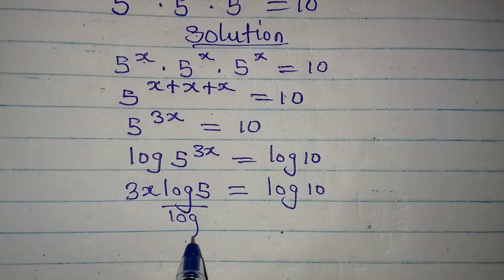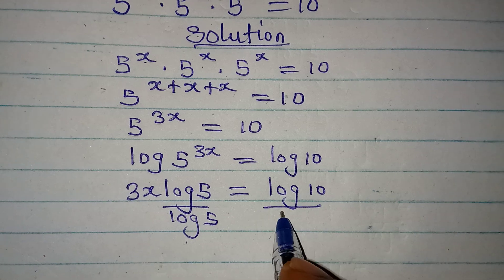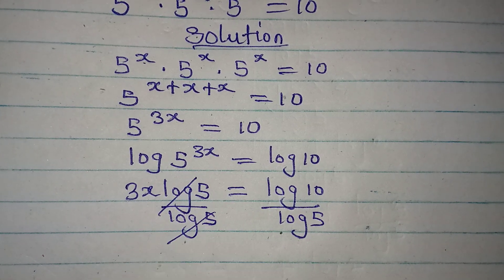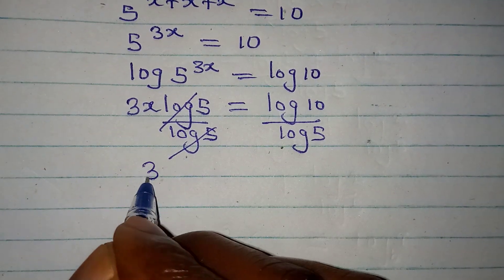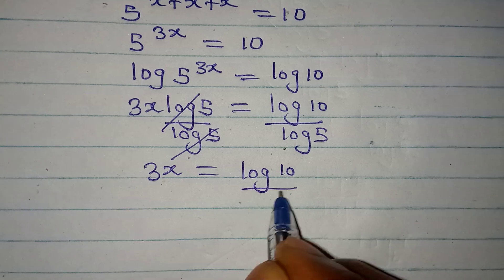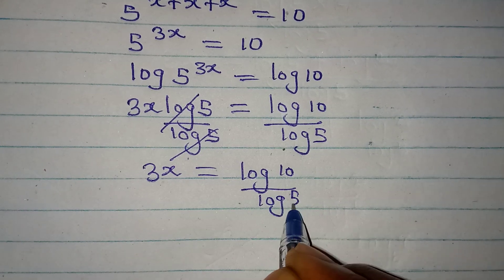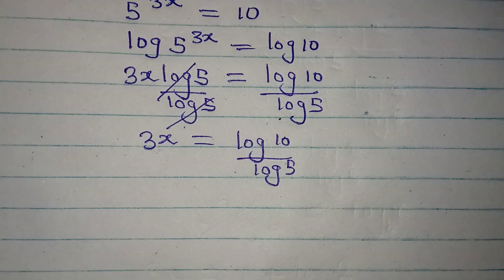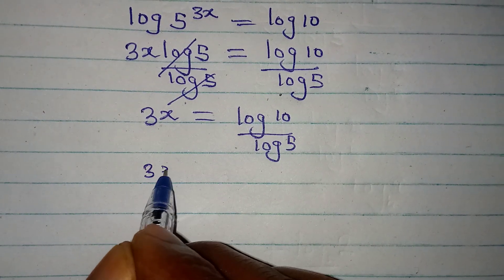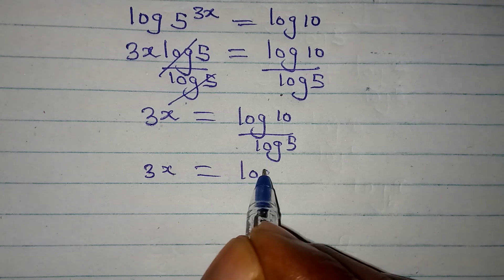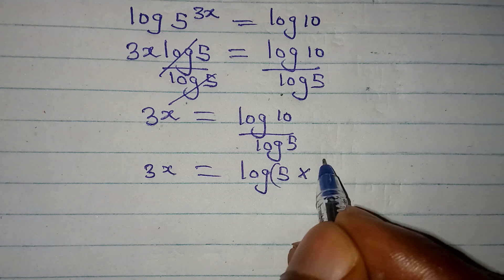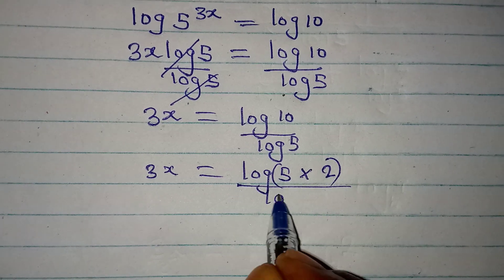So I'll divide this by log 5 and divide this by log 5. This will cancel this. And then I have 3x to be equal to log 10 over log 5. But then I can simplify this right hand side so that I will have 3x to be equal to log 5 times 2. This will be over log 5.